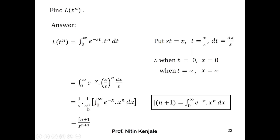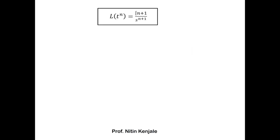Therefore, the Laplace transform of t raised to n is Γ(n+1) over s raised to n+1. We have: L{t^n} = Γ(n+1) / s^(n+1). At this point, an important property of the gamma function states that Γ(n+1) equals n factorial, whenever n+1 is a positive integer.